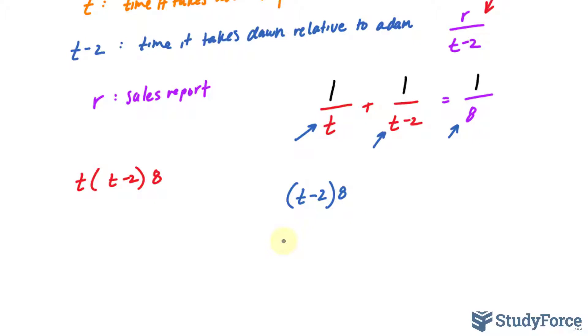Notice that we don't have a fraction anymore. By multiplying this factor to this term, it goes from being a fraction to something that's not. And that's exactly what we need because it will help us solve. Multiplying this term by these three factors gives me t times eight. And multiplying this to that gives us t(t minus two).